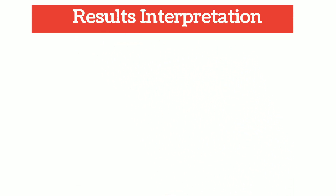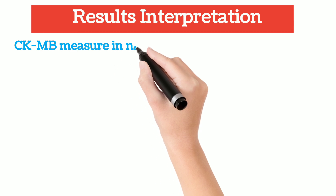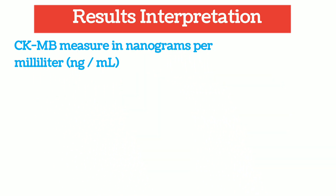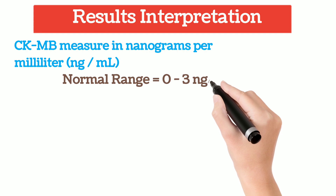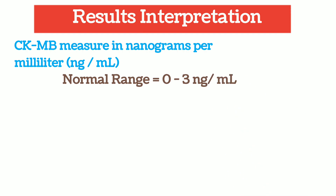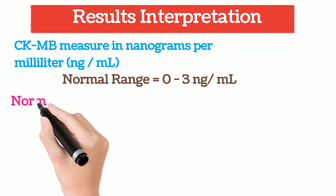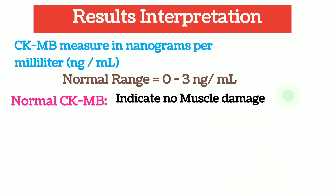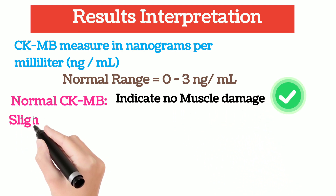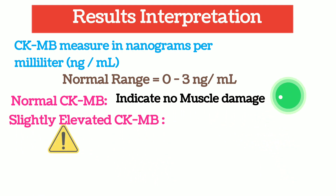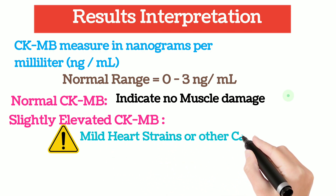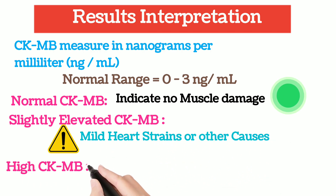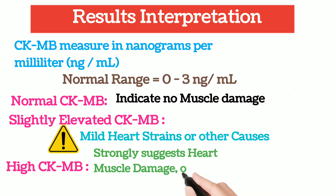Regarding results and interpretation: the CKMB Test measures nanograms per milliliter. The normal range of CKMB is 0–3 ng per milliliter. A normal CKMB indicates no muscle damage. A slightly elevated CKMB shows mild heart strain or other causes. A high CKMB strongly suggests cardiac muscle damage, which is mostly due to heart attack.